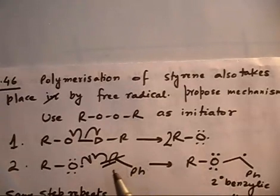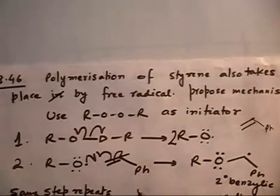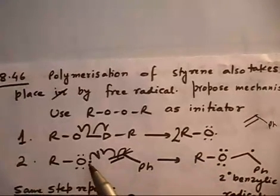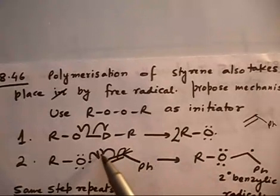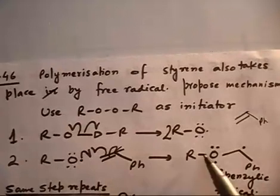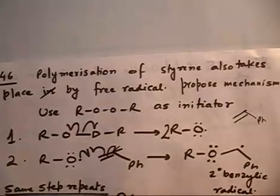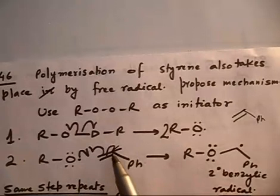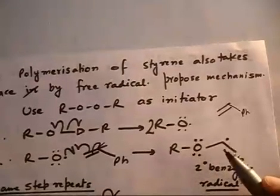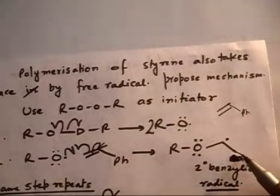The next step is chain propagation. One R-O dot with the styrene molecule - this is the styrene molecule with an electron-rich double bond. This electron and one electron coming from double bond makes a bond, and one electron goes to this carbon. So I will have R-O-C, and then I have one carbon, two carbons, and then Ph. Let me show this correctly.